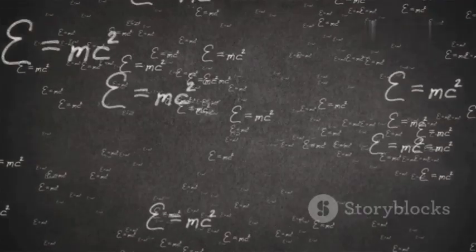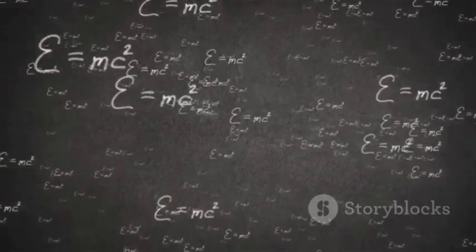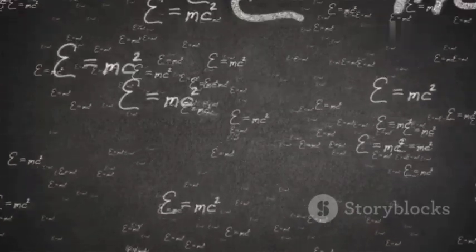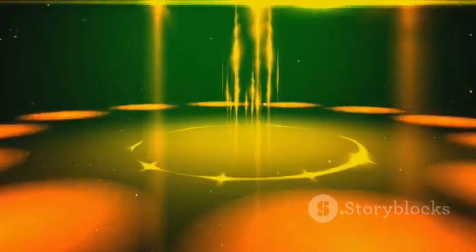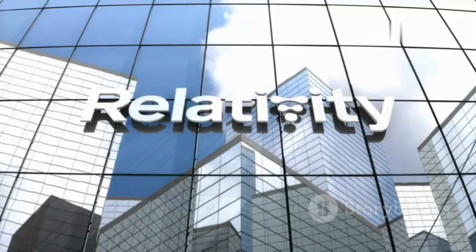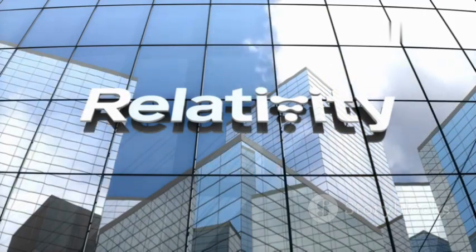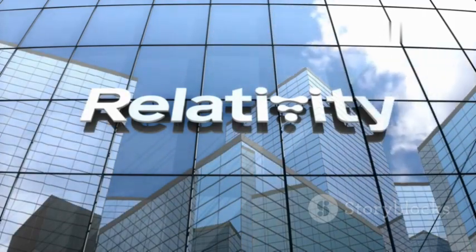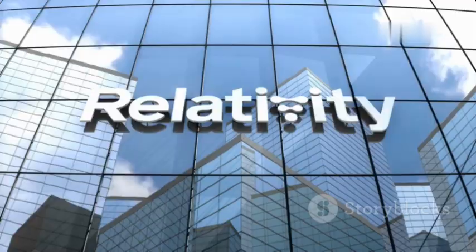Before Einstein we thought space and time were unchanging and absolute, like a stage where the events of the universe unfolded. But Einstein showed us that the stage itself is part of the play. Space and time are intertwined and can be stretched and squeezed depending on how fast you're moving or how much gravity you're experiencing.